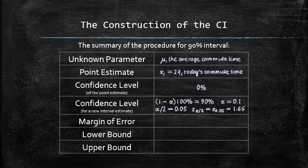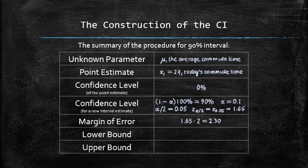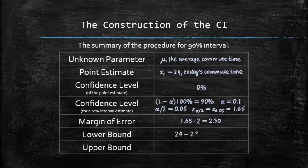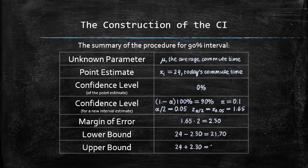Then the margin of error according to the formula is 3.30 and we can compute the lower bound by subtracting the margin of error from the point estimate and obtaining 20.70 and we get the upper bound by adding the margin of error to the point estimate and getting 27.30.